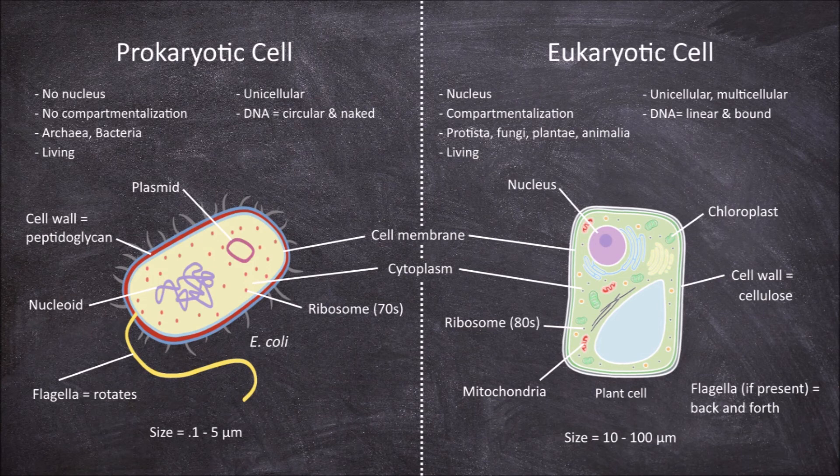Another difference is that prokaryotes possess a singular circular DNA molecule, making them haploid. In most, but not all eukaryotes, chromosomes within the nucleus are usually paired, making them diploid, and sometimes they have more.